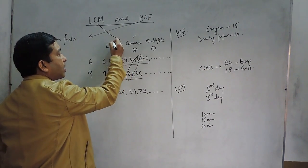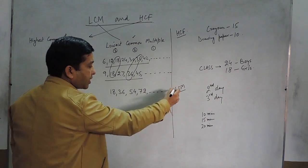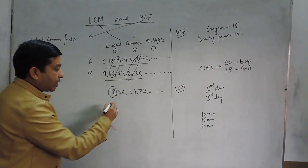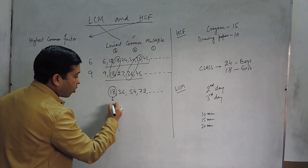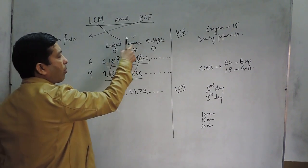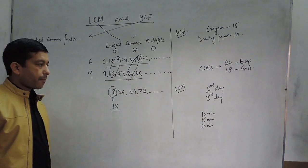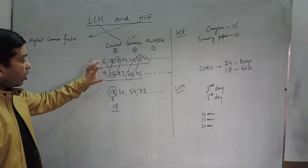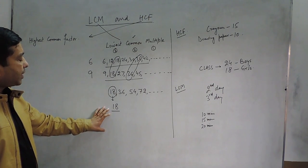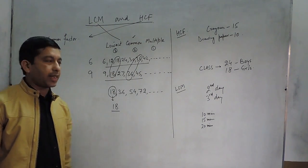Then we talk about the third point — the lowest. Among all these common numbers, the lowest number is 18. So 18 is known as the LCM, or the Lowest Common Multiple, of 6 and 9. This is how we have to visualize finding the Lowest Common Multiple of 6 and 9.